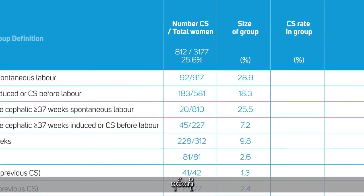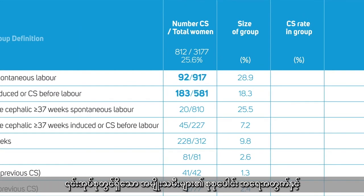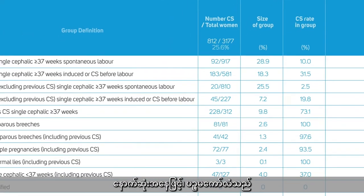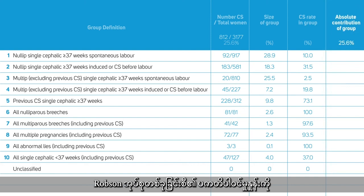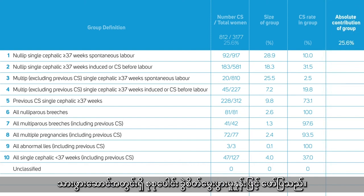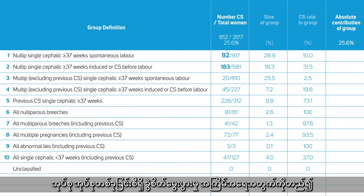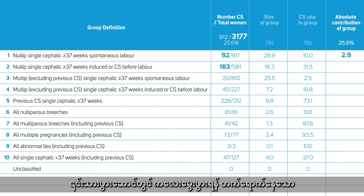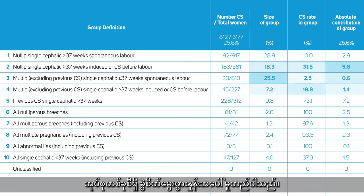The fourth column shows the cesarean section rate in each group, calculated by dividing the number of cesarean sections in each group by the total number of women in each group. Lastly, the fifth column represents the absolute contribution of each group to the total cesarean section rate in your unit. It is calculated for each group by dividing the number of cesarean sections in each group by the total number of women admitted in your unit. The magnitude of this contribution will depend on both the size of the group and the cesarean section rate in each group.